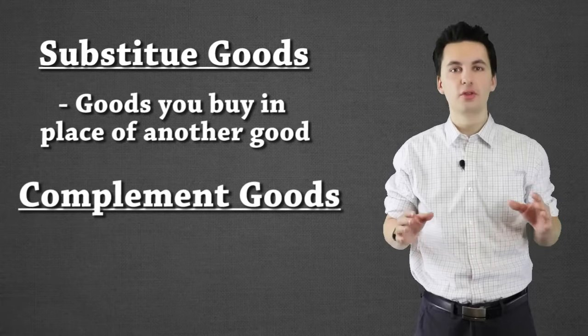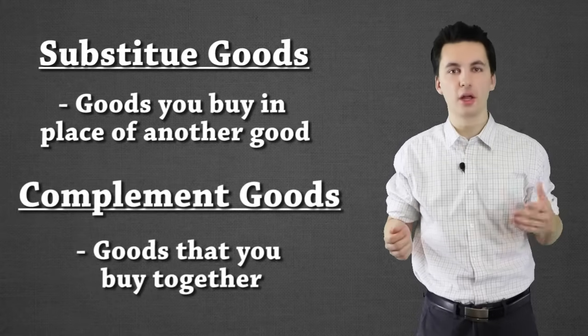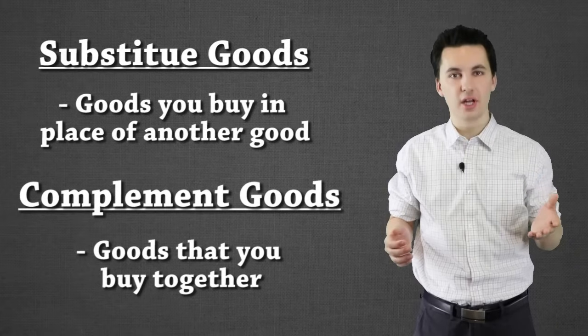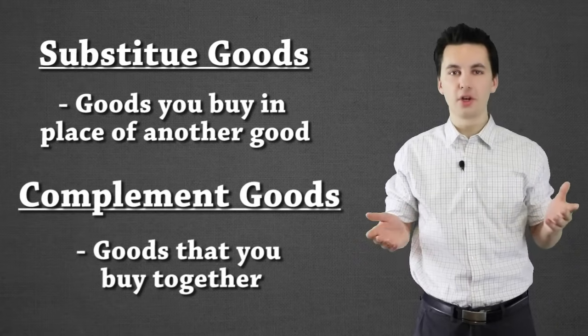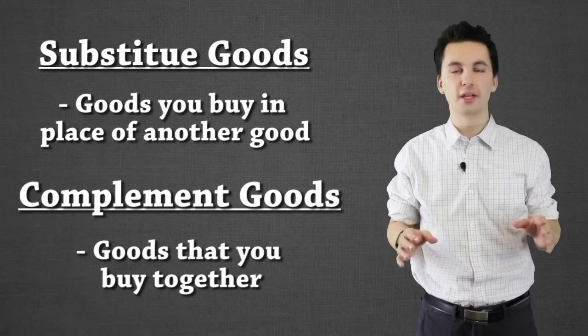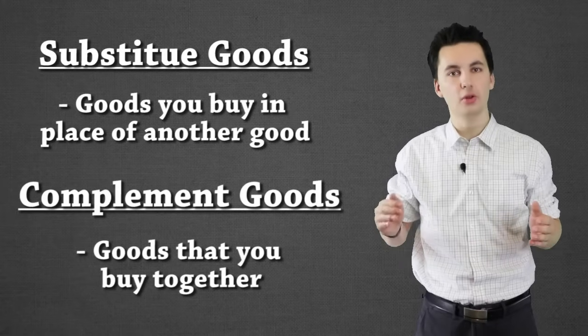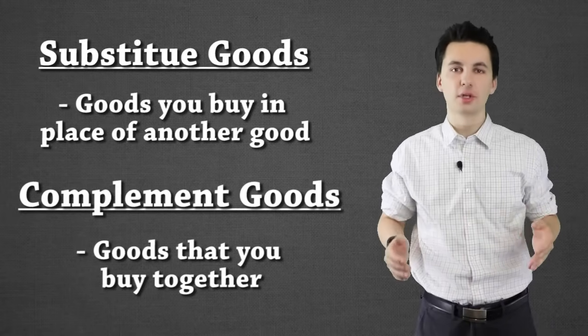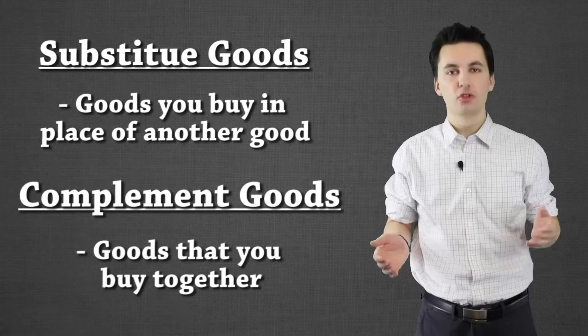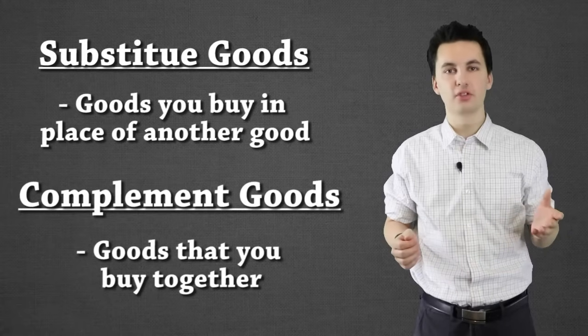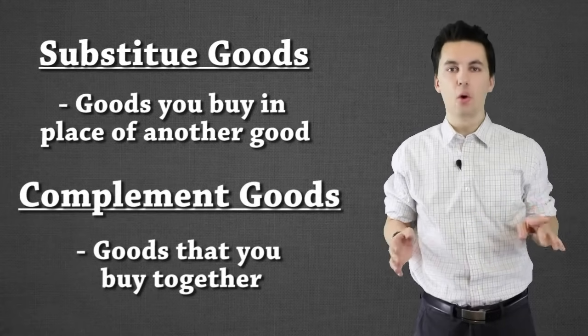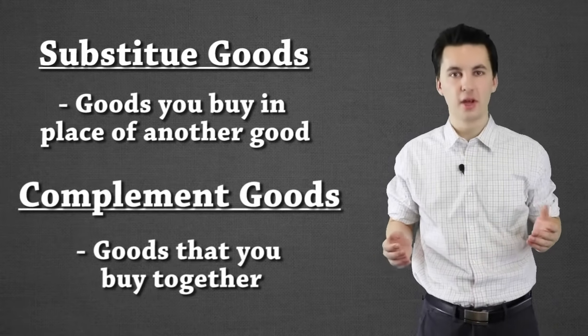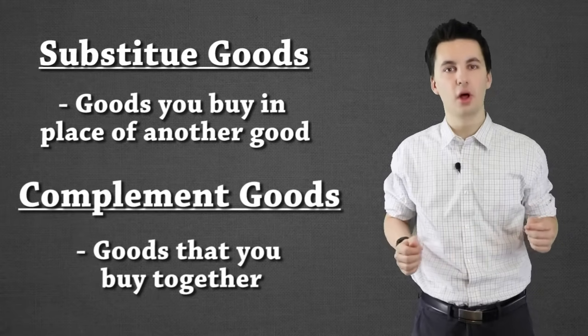For complement goods, these are things that we buy together. Think of like a tennis ball and a tennis racket. If all of a sudden the tennis racket went up to $5,000 for one racket, odds are people play less tennis. And what's going to happen then is the demand for tennis balls will decrease. Even though nothing happened with the price of tennis balls, but they're complement goods. If I buy one, I'm probably going to buy the other. So they affect each other. If the price of one goes up, well demand for the other will go down. Or if all of a sudden our tennis rackets become just a dollar and now more people start playing tennis, the demand for our tennis balls will also increase.